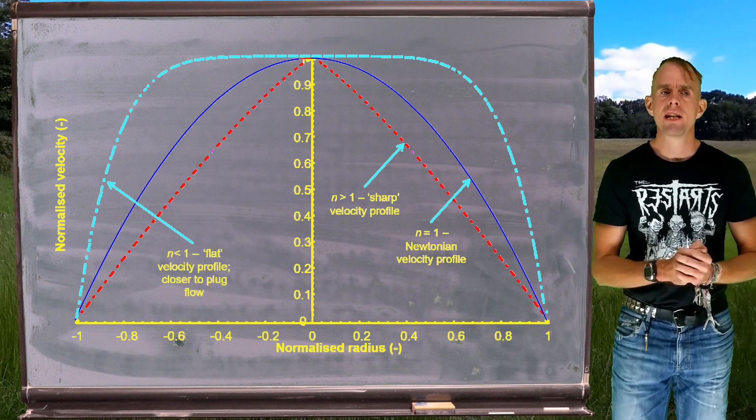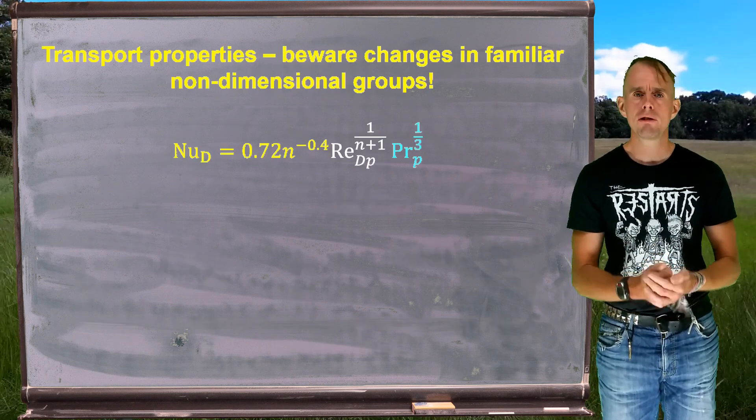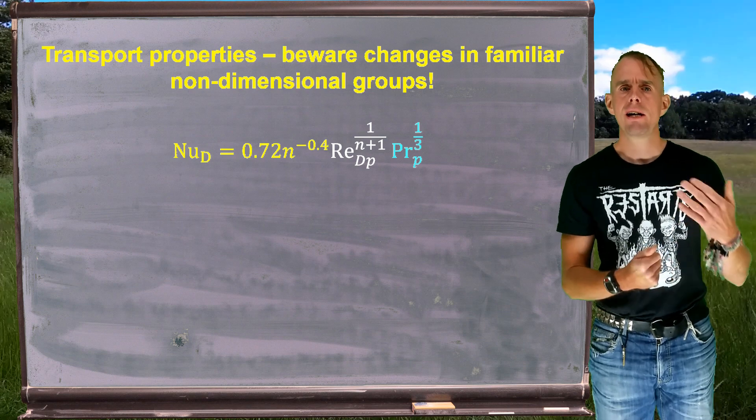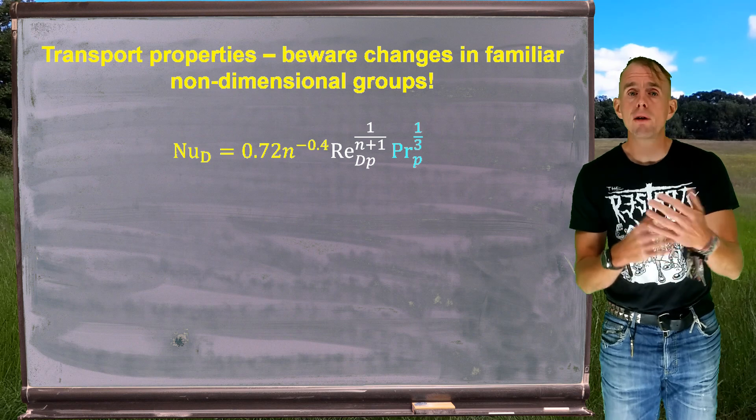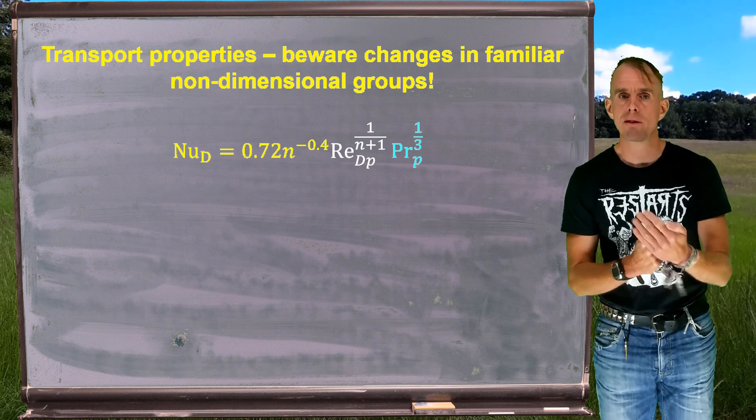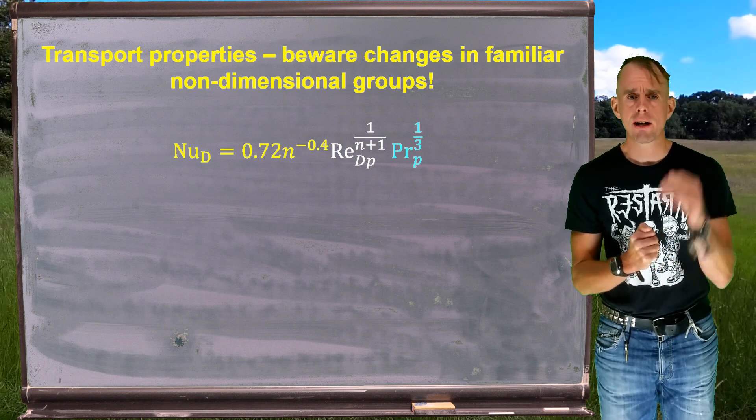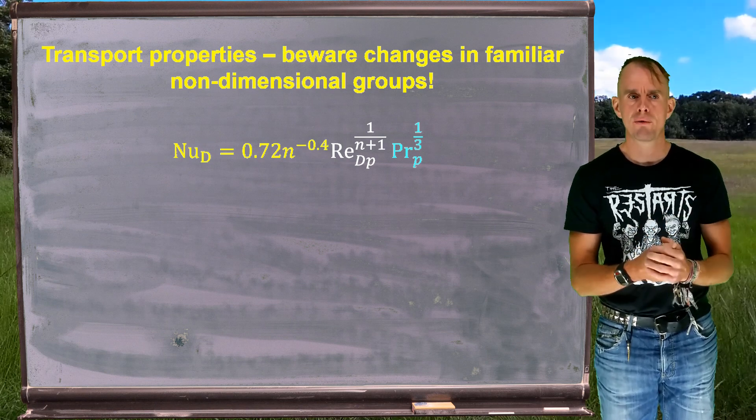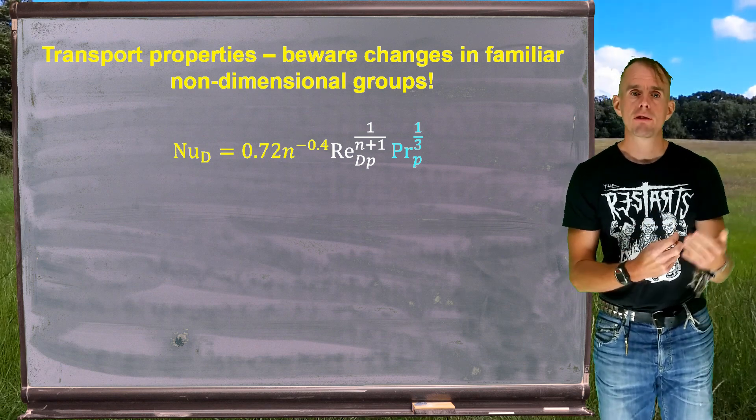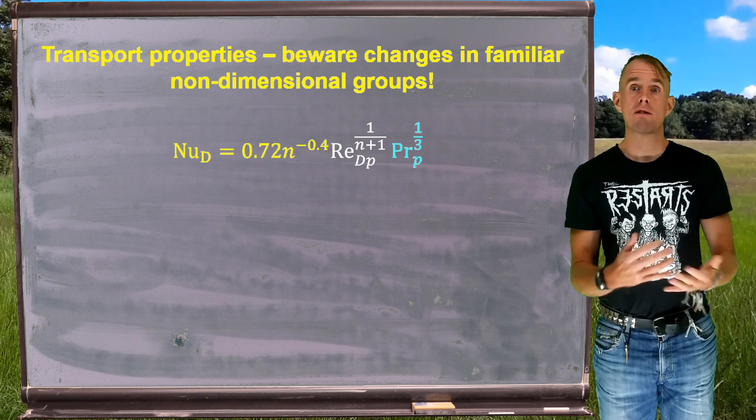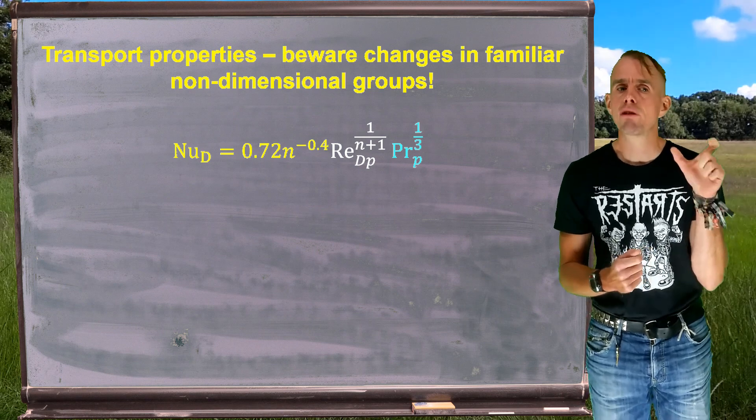Now, as chemical engineers, we often worry about heat transport and mass transport. And we're used to seeing correlations that give us heat transfer coefficients. For example, via a Nusselt number, via flow non-dimensional groups. For example, a Reynolds number, maybe even a Prandtl number. What I've put on the board there is a correlation that gives us a heat transfer coefficient for the flow of a power law fluid. Now, there's lots of correlations in the literature that work for generalized Newtonian fluids. And the reason why I've put this particular correlation up is to act as a warning.